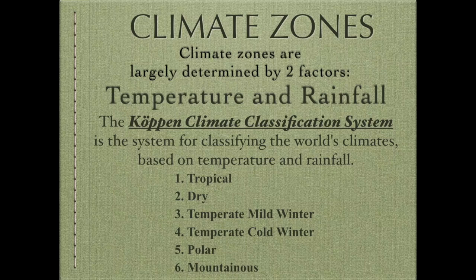Climate zones are largely determined by two main factors: temperature and rainfall. The Köppen climate classification system focuses on temperature and rainfall. Generally, you're going to have a majority of your warmer temperatures and rainfall in the tropic zones — around the equator, you're going to have higher temperatures and a lot of rain. There are areas with lots of evaporation where moisture moves and then rains in a different area of the tropic zone, which may leave more of a desert area.